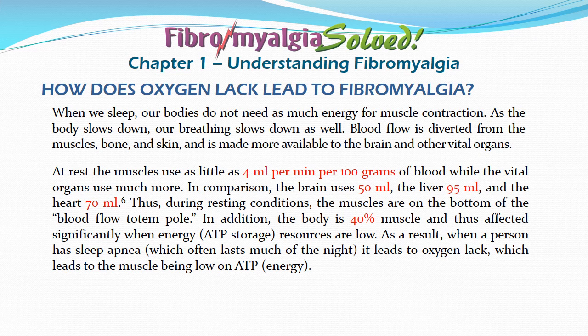In comparison, the brain uses 50 milliliters, the liver 95 milliliters, and the heart 70 milliliters. Thus, during resting conditions, the muscles are at the bottom of the blood flow totem pole. In addition, the body is 40 percent muscle and thus affected significantly when energy or ATP storage resources are low.